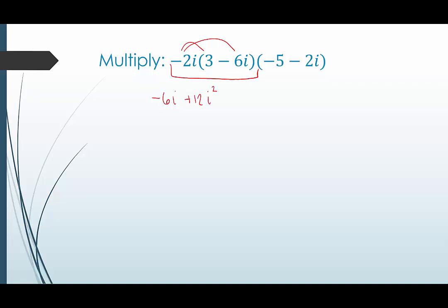And i times i is i squared. I might clean this up before I go ahead and distribute to that last number. i squared is equivalent to negative 1. So this would be like 12 times negative 1 or negative 12. I'll put that real part first, although really in the middle it doesn't matter. So we'll have negative 12 minus 6i. And we're going to multiply that by negative 5 minus 2i. A lot of negatives going on here.